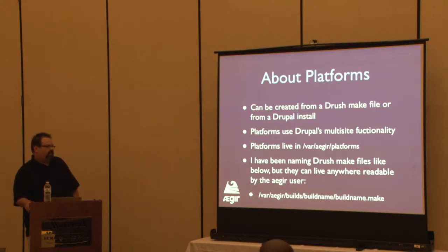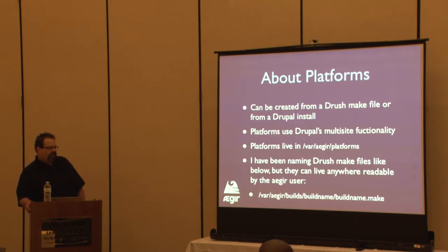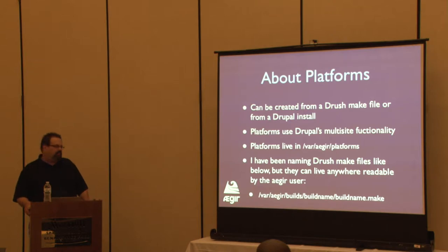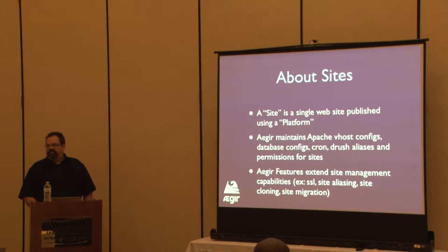Here's an example of how I've been naming my make files. I get pretty particular about naming and standards so it doesn't confuse other folks on my team. We make a folder called 'builds' and under that a folder with the build name, and under that 'buildname.make'. The reason for the folder is I figure I may need to put other files in there at some point — maybe a readme — just to keep them contained.